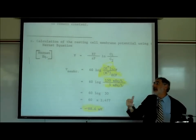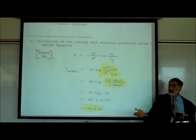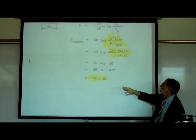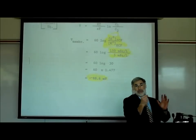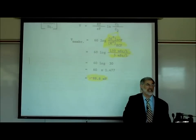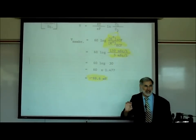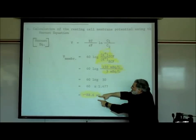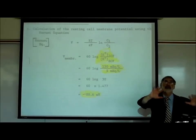If you multiply all those constants together, you get 60, which also converts the natural logarithm into a regular logarithm. So it becomes: 60 times the log of (potassium inside divided by potassium outside). Potassium inside is 150 milliequivalents per liter, outside is 5 milliequivalents per liter. 5 into 150 is 30. So we have 60 times log(30). Log of 30 is 1.477, and 60 times 1.477 equals 88.6 millivolts — about minus 90 millivolts. That's the cell voltage, mathematically.